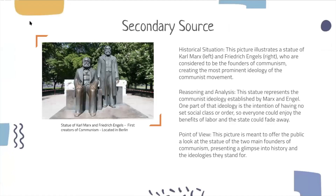Our first secondary source is a statue of Karl Marx and Friedrich Engels, the first creators of communism, located in Berlin. Historical situation: this picture illustrates a statue of Marx, who is to the left, and Engels, who is to the right — the founders of communism, creating the most prominent ideology of the communist movement. Reasoning and analysis: this statue represents the communist ideology established by Marx and Engels, including the intention of having no set social class or order so everyone can enjoy the benefits of labor and the state could fade away. Point of view: this picture offers the public a look at the two main founders of communism, presenting a glimpse into history and the ideologies they stand for.